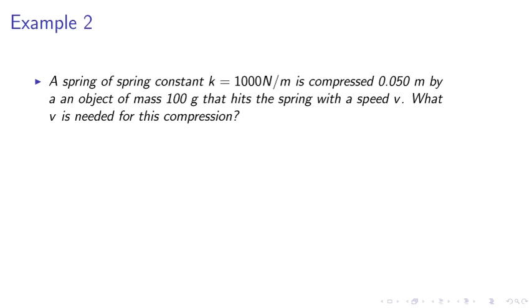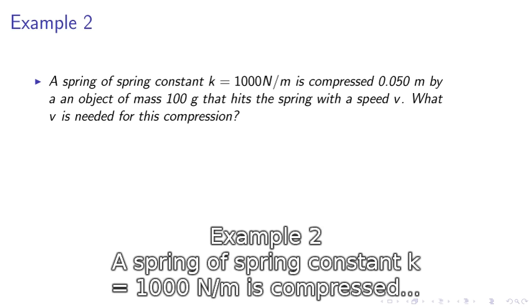Example 2. A spring of spring constant k equals 1000 newton per meter is compressed 0.050 m by an object of mass 100 grams that hits the spring with speed v. What v is needed for this compression?